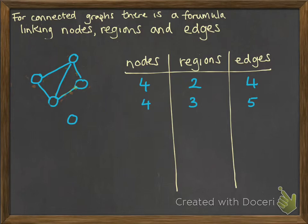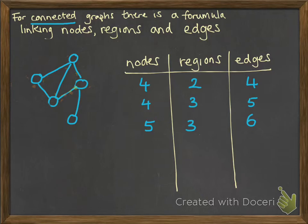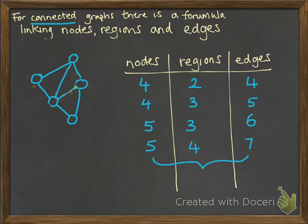What about if we put another node on? Remember, for this formula to work, we need our graph to be connected. So we've got five nodes now, but we have to connect that node in — so we've added an edge, giving us five nodes, three regions still, and six edges. If I add in one more edge, we get seven edges; adding that extra edge closed off a region, so now we have four regions, but we're still left with five nodes. There is a link here between the nodes, the regions, and the edges — investigate what that link is.